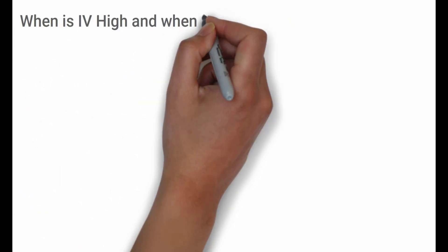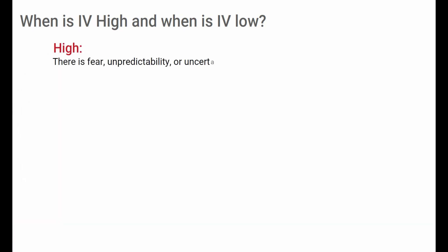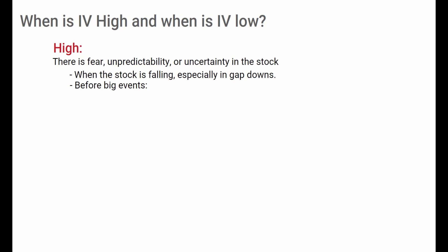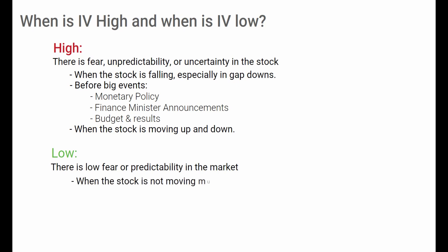When is IV high and when is IV low? IV is high when there is fear, unpredictability, or uncertainty in the stock. This usually happens when the stock is falling — especially on gap downs — and before big events like monetary policies, FM announcements, budgets, stock results, etc. IV is low when there is low fear or predictability: when the stock is not moving much, when it is rising steadily, or when there are no events.